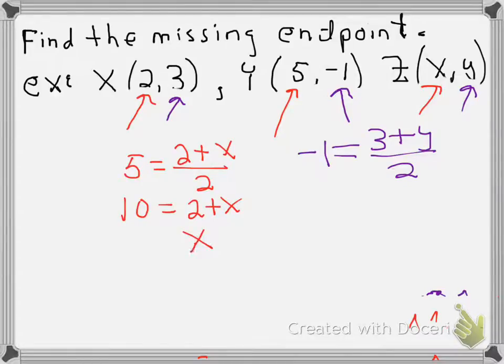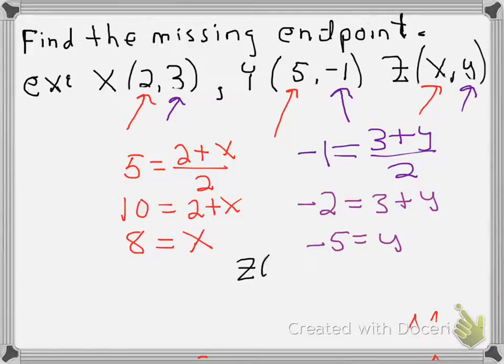leaving us with X equal to 8. In the case of Y, again multiply by 2. Negative 2 is equal to 3 plus Y, and that means that negative 5 will be the value of Y. That means our answer is that the coordinates of Z are 8, negative 5.